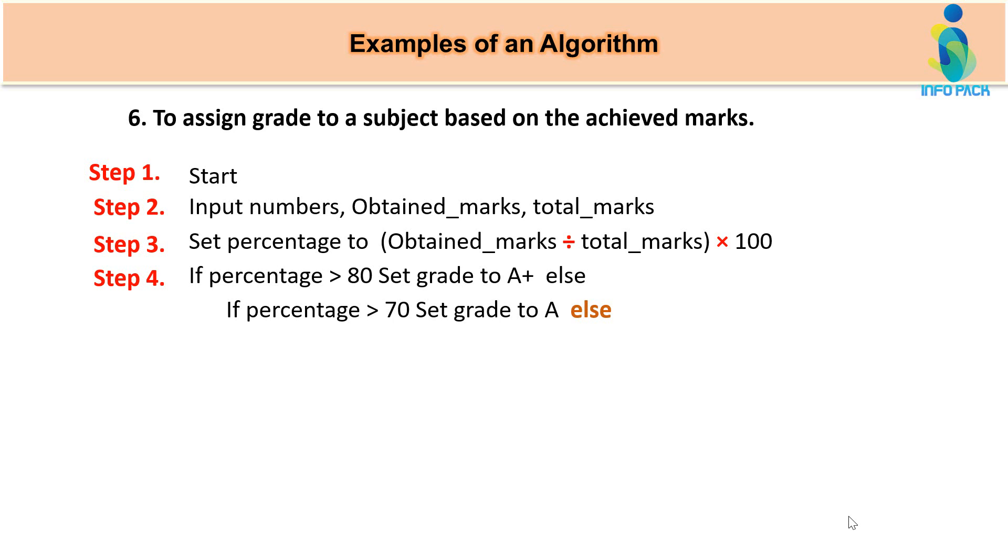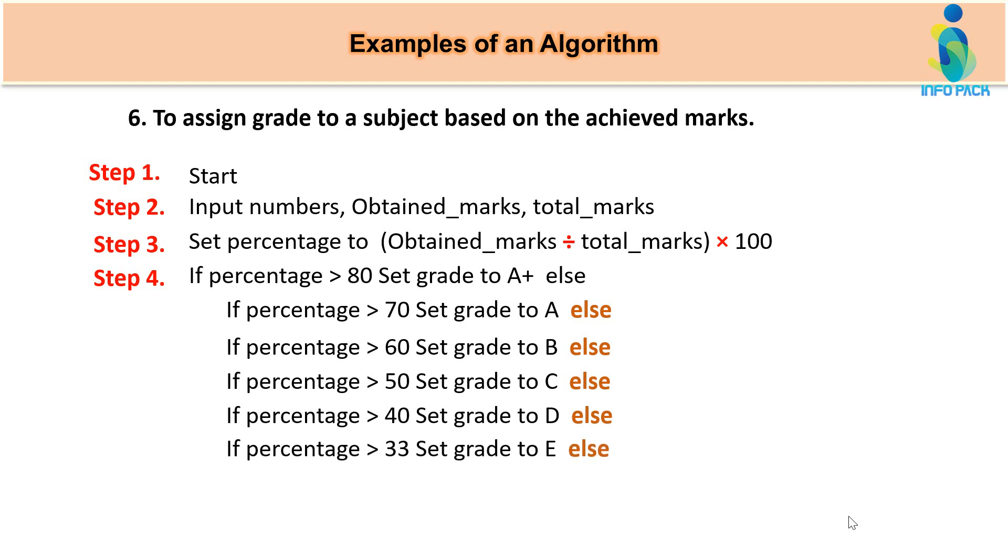If percentage is greater than 70, toh phir kya grade assign hoona chahehe? A. Agar nahi hai ye condition, toh next condition ko check karna hai. Same like if percentage is greater than 60, agar 60 se greater hai, toh koon sa grade assign hooga? Set grade to B. Lekin agar percentage greater than 60 se nahi hai, toh phir koon si condition check hooghi? 50 waali. If percentage is greater than 50 then set grade to C. In case no, then if percentage is greater than 40 set grade to D. In sari conditions mein se kooi bhi condition meet kerti hai, toh hum uska result display karwa deenge.